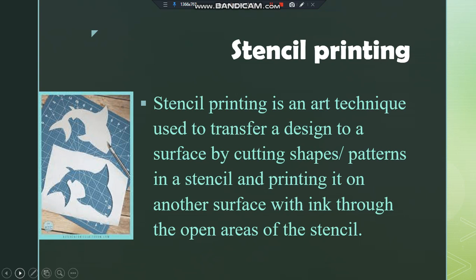To transfer the image to the stencil: you get a piece of paper and staple a stencil on top of it. Then use a cutter to follow the outlines of your source of inspiration — in this case, the dolphin — and cut out that image. After that, take the stencil to your fabric and use a sponge to apply ink through the open area of the stencil onto the fabric. That is stencil printing — using a stencil to apply textures, designs, and images onto a fabric.